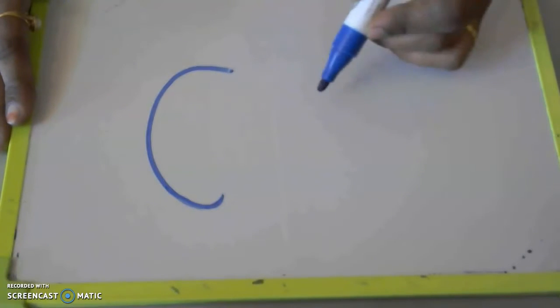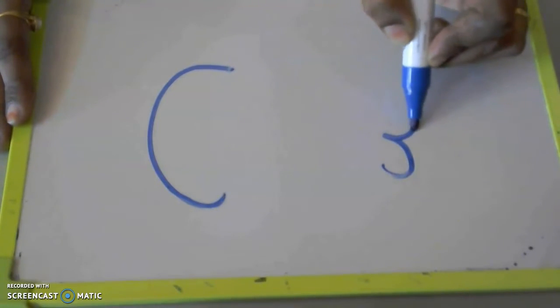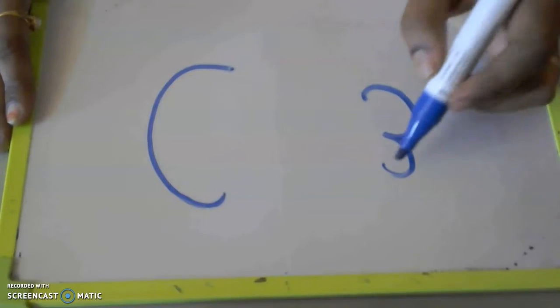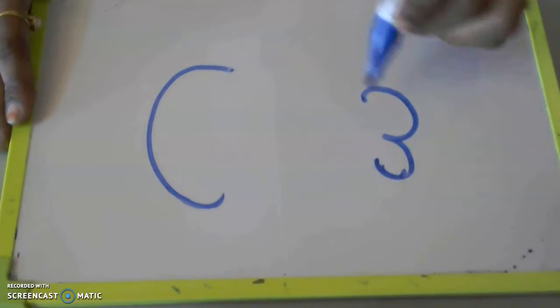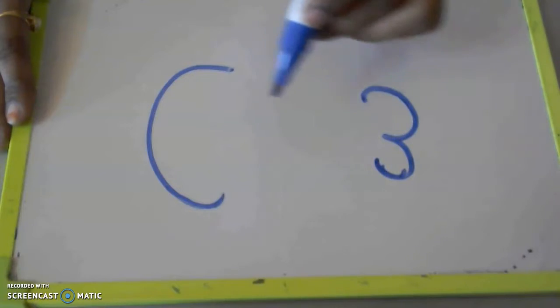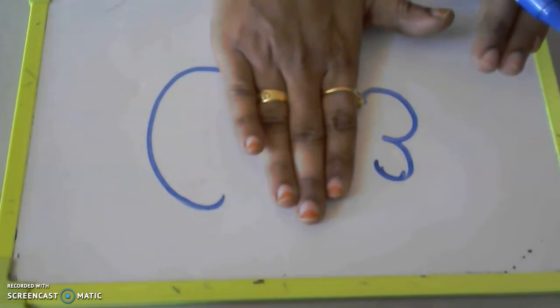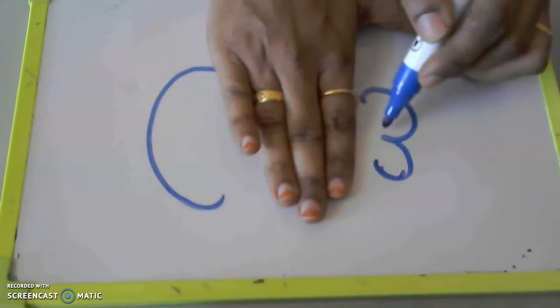Very good. Then you can put the number. What number is this? Number 3. Correct? C and you can give one distance. You keep your hands like this and then write number 3.